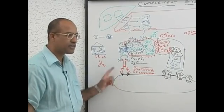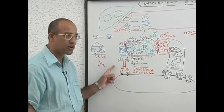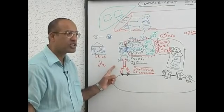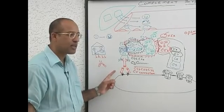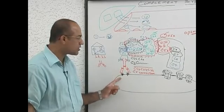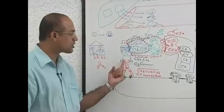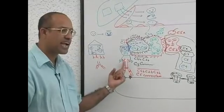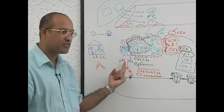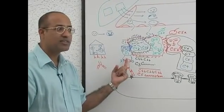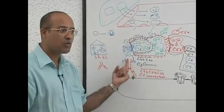If these antibodies belong to the class of IgG or IgM, once the antibody binds with the antigen, the Fc portion of the antibody is activated, which activates complement number 1.